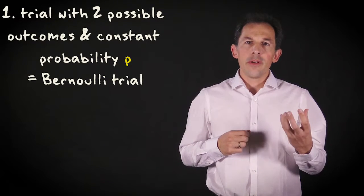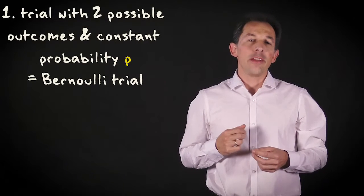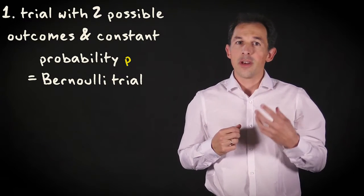In fact, you have now already encountered the three ingredients for a binomial distribution. First, there is a phenomenon or trial with two possible outcomes and a constant probability of success. This is called a Bernoulli trial.